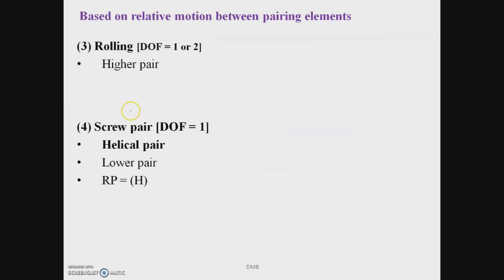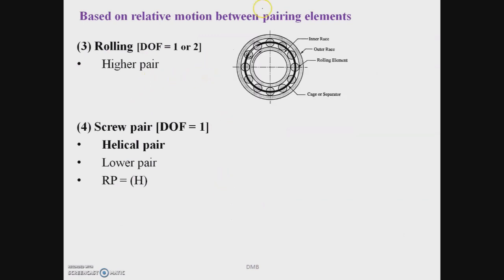A rolling pair is formed when one element rolls with respect to another. Examples are ball and roller bearings and a roller rolling on a flat surface. Rolling pair has one or two degrees of freedom — one for rolling, and two if slip is also present along with rolling motion. Rolling pair is a higher pair.